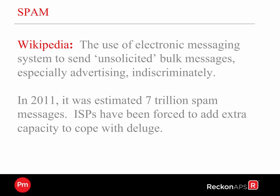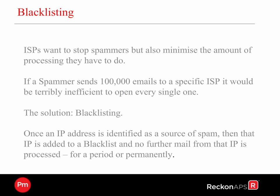So internet service providers have been forced to add extra capacity to cope with the deluge. Internet service providers have a vested interest to stop spammers and minimise the amount of processing they have to do. If a spammer sends 100,000 emails to a specific ISP, it would be terribly inefficient to open every single one. The solution is blacklisting. Once an IP address is identified as a source of spam, that IP address is blocked — this means no further mail from that IP is processed for a period or permanently. So if you've sent something out and you're blacklisted, that recipient will never receive not only your bulk email processing information but any communication to that client.